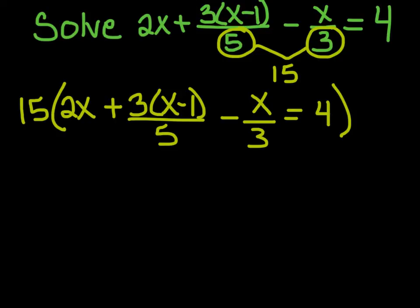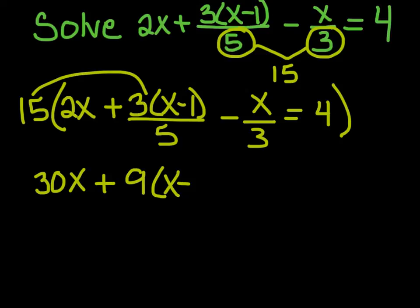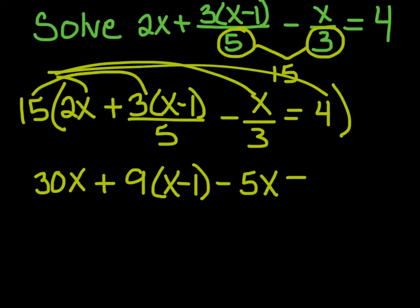So 15 times 2x gives me 30x. And then if I take 15 times 3 and divide it by 5, I get 9. So 9 and then the x minus 1 stays in parentheses. And then when I multiply 15 times x and divide it by 3, I have minus 5x. And 15 times 4 is 60.